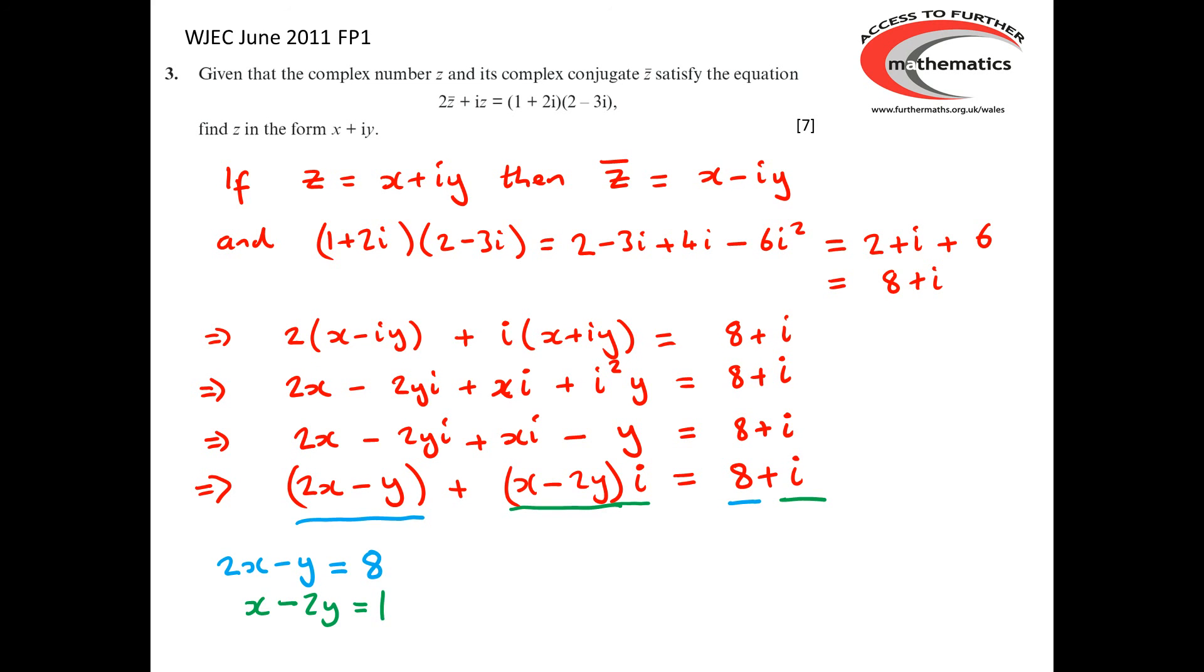We now have a pair of simultaneous equations. And we can solve those in any appropriate way to obtain x = 5 and y = 2. And this means that z must equal 5 + 2i.